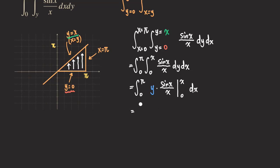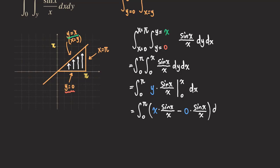Plugging in the bounds, we get the integral from 0 to pi of [x times sin(x)/x minus 0 times sin(x)/x] dx. The zero term vanishes, and the x in the numerator cancels with the x in the denominator, leaving us with just the integral from 0 to pi of sin(x) dx.